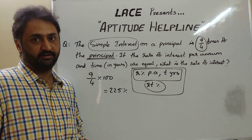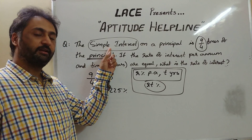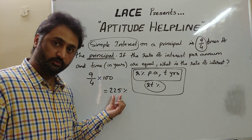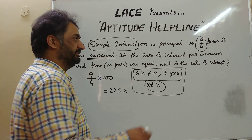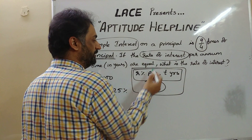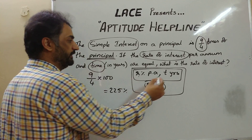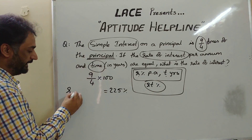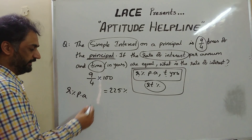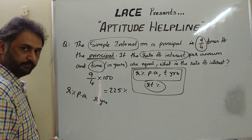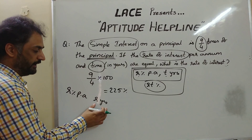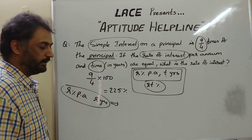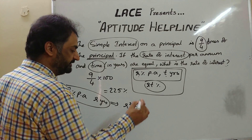So the first hint tells us the total interest accumulated is 225% of the loan taken. The second important hint is that the rate of interest R and the time period T are both equal. So when both are equal, every year R% is applied for R years, making the total percentage accumulated R × R, which is R²%.